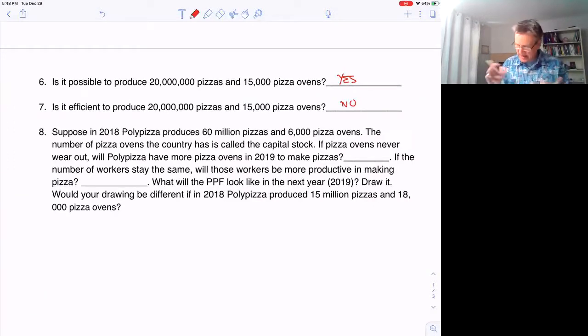Suppose in 2018, Poly Pizza produces 60 million pizzas and 6,000 pizza ovens. The number of pizzas in the country is called the capital stock, abbreviated with a big K. If pizza ovens never wear out, will Poly Pizza have more pizza ovens in 2019? Yes, they will have 6,000 more in 2019, which means they should be able to produce more pizzas because they have more pizza ovens in 2019.